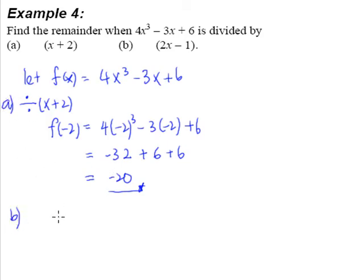Alright, let's take a look at part B of the question. Similar, we have the same f(x), but now we are going to be divided by 2x - 1. So when divided by 2x - 1, it means that we are to substitute in x equals to 1 over 2, which is half.